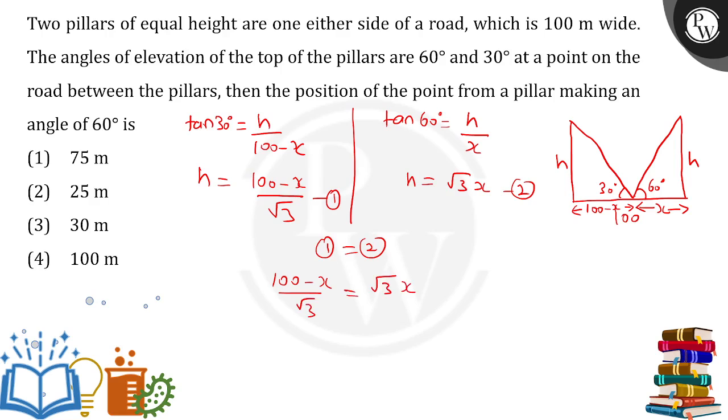So from here we are having 100 minus x equals root 3 into root 3, that means 3x. So x going on the other side, 4x. 4 dividing, 100 divided by 4, x comes out to be 25 meters.